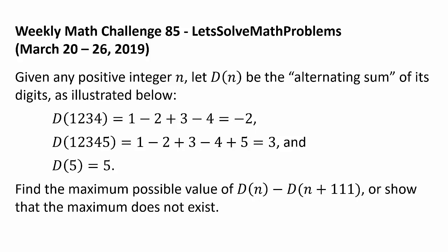And D of any one-digit integer, like D(5), is the same as the integer itself, or 5. Find the maximum possible value of D(N) minus D(N + 111), or show that the maximum does not exist.